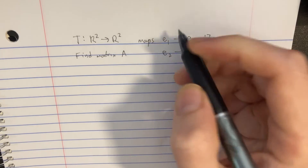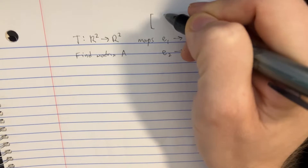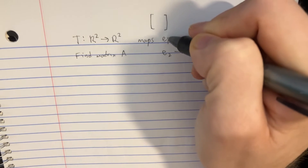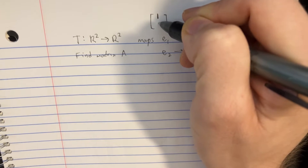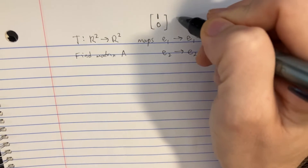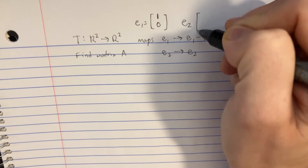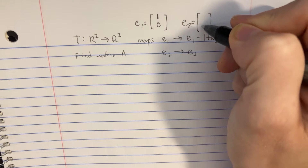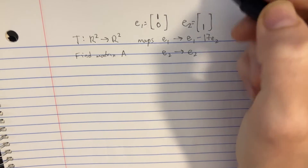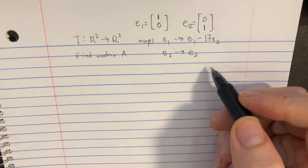If you have some kind of vector in 2D, it's going to have two rows. If it's E1, then the first row is going to be one and all the rest are going to be zeros — that's E1. For E2, it's again a 2D vector, but since it's the second position, that entry is going to be one and everything else becomes zero. So that's what E1 and E2 are.